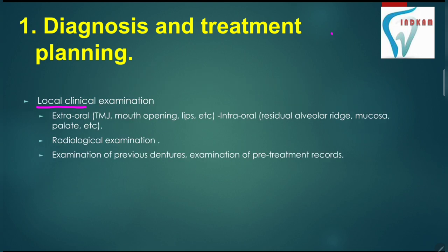In local examination, we have to do extraoral as well as intraoral examination. For extraoral examination, we have to check TMJ, mouth opening, and lips. For intraoral examination, we have to check for the residual alveolar ridge, mucosa, palate, etc.